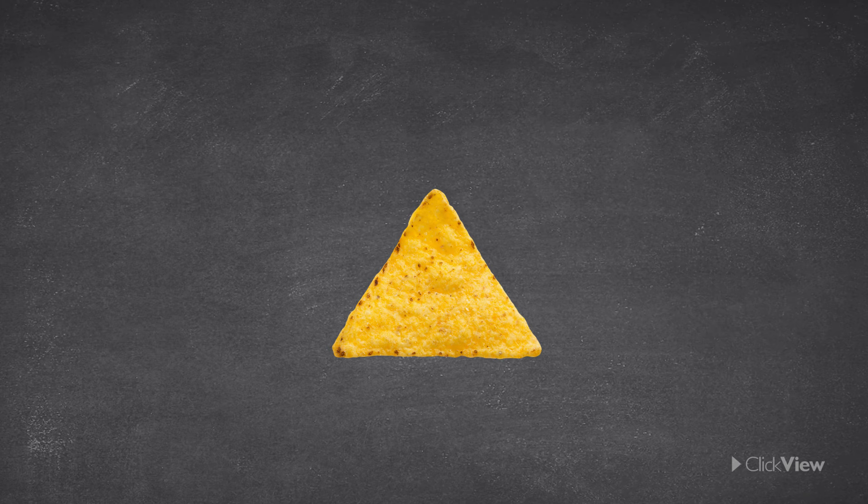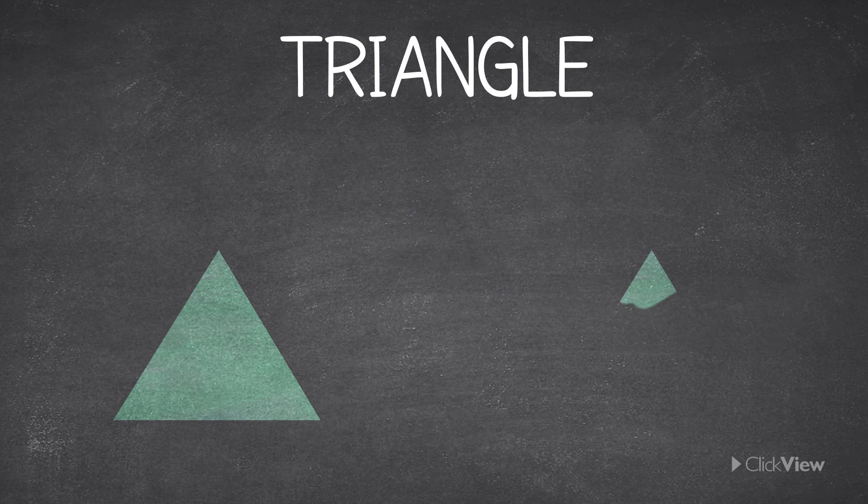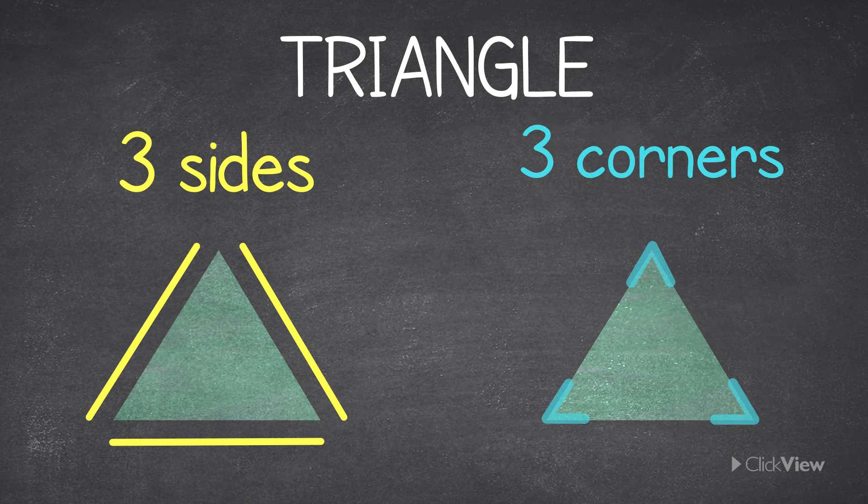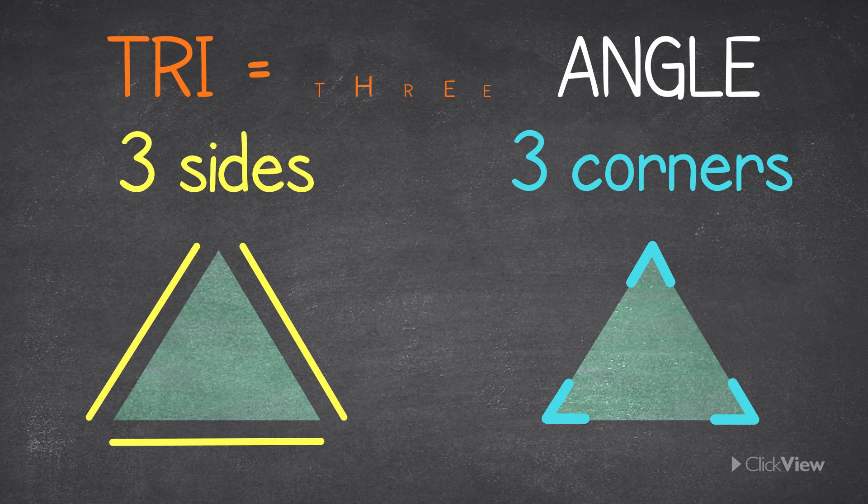This is a triangle. All triangles have three sides and three corners. This is easy to remember because tri means three.